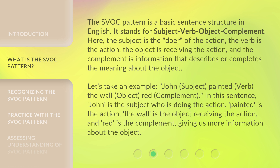Let's take an example. John (subject) painted (verb) the wall (object) red (complement). In this sentence, John is the subject who is doing the action, painted is the action, the wall is the object receiving the action, and red is the complement, giving us more information about the object.